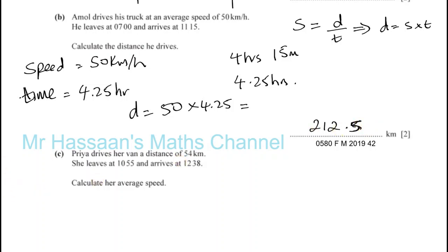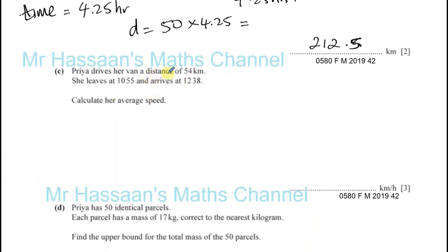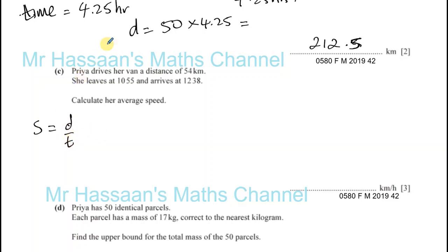Part C: Priya drives her van a distance of 54 kilometres. She leaves at 10:55 and arrives at 12:38. We need to calculate her average speed. Speed equals distance divided by time. We know the distance is 54 kilometres, so now we need to work out the time in hours, since we want the answer in kilometres per hour.